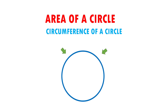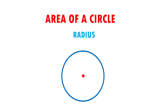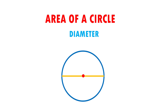The circumference is the outline of the circle, the edge. It is also known as the perimeter. The radius is the line segment from the center of the circle to any point of the circumference. The diameter is a line segment that passes through the center of the circle and it divides it into two equal parts.